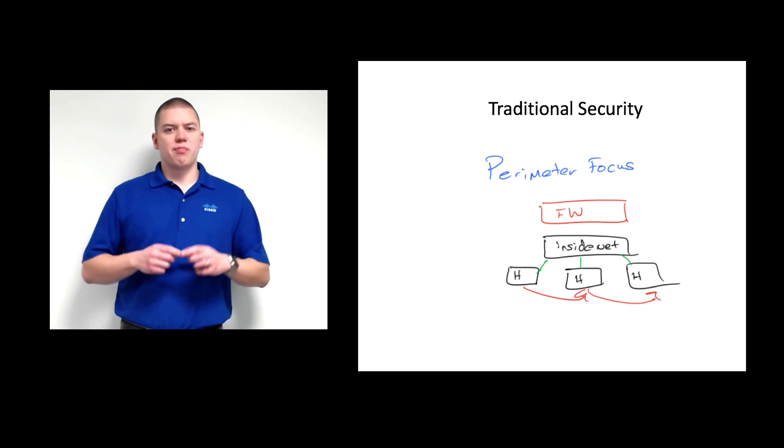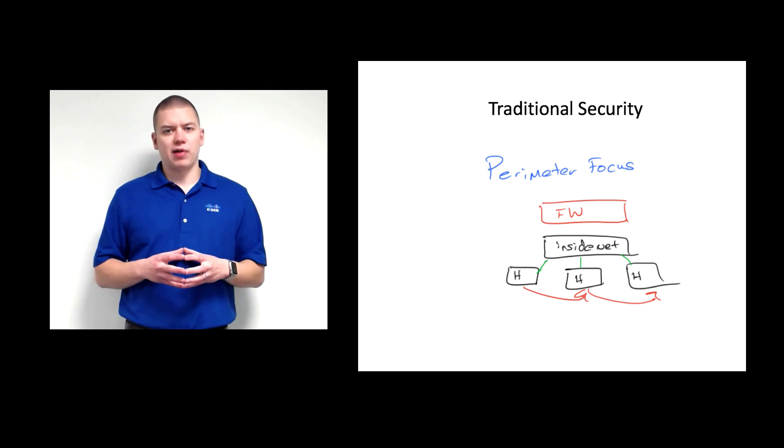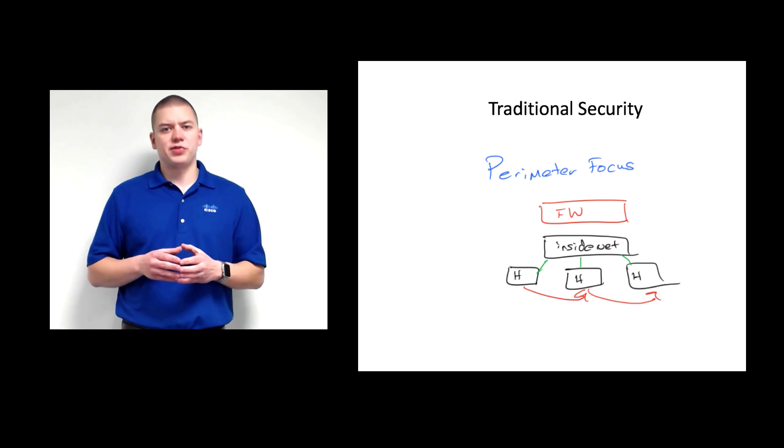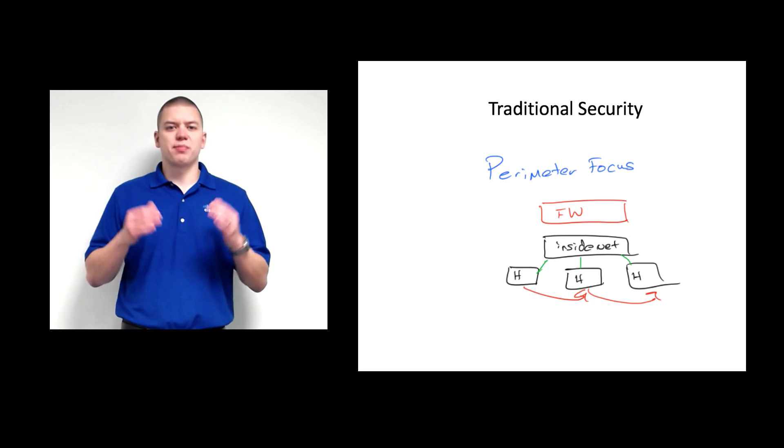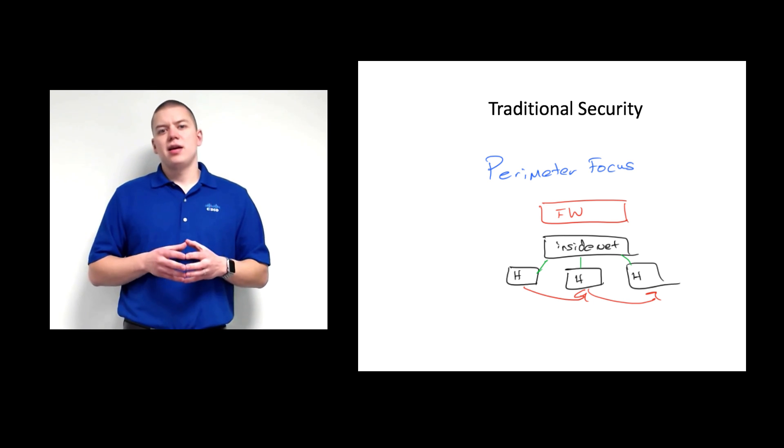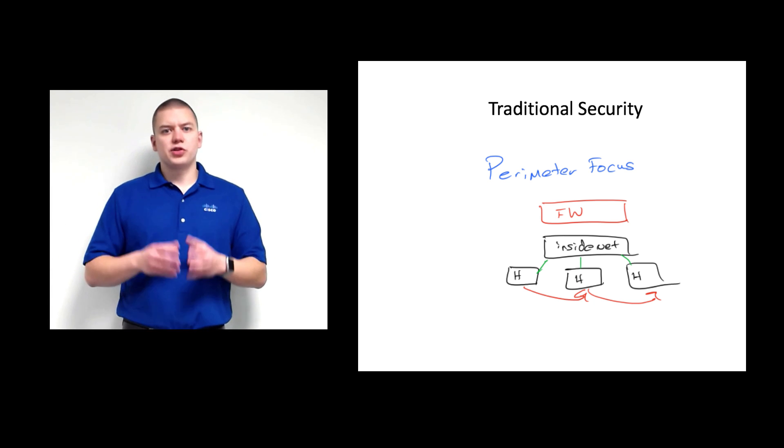For years, we have focused on perimeter security solutions, but these have left us blind to security challenges inside our environment. In a recent PhoneMan survey of 735 security professionals, 45% said they found a breach by accident, and 95% found a breach three months after its initial occurrence. This shows we have huge challenges with visibility in our environments.